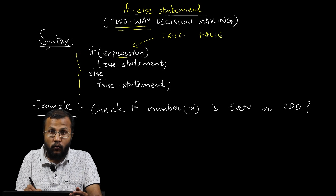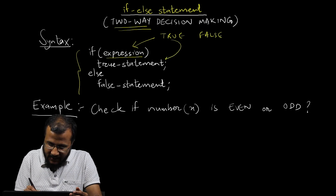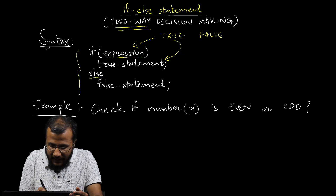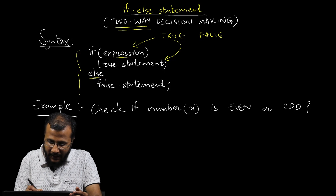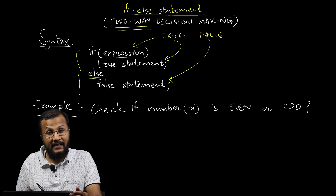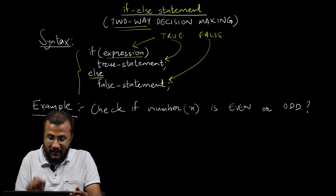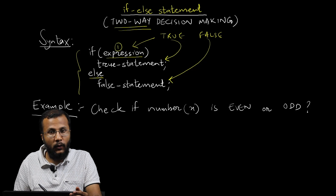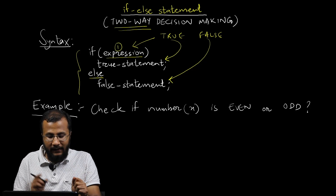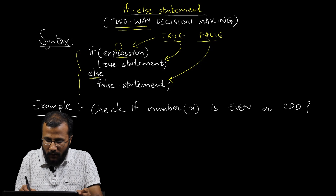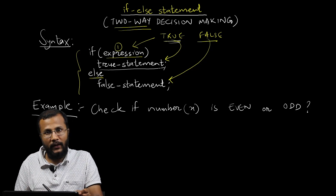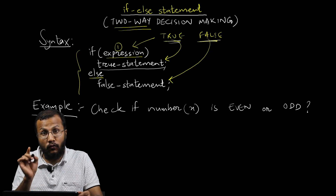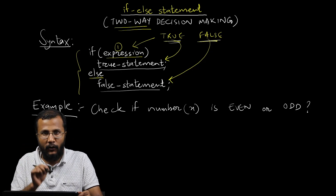Whenever the expression evaluates to true, the true statement is executed. There is a keyword called else — a reserved keyword in C — and if this condition or expression is false, only then the false statement is executed. First, the expression is evaluated; then the output would be either true or false. Whenever the output is true, the true statement is evaluated, and if false, the false statement is evaluated.